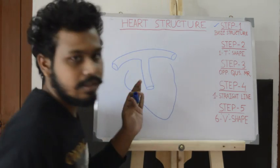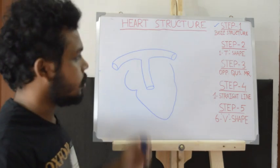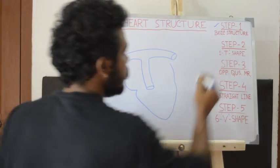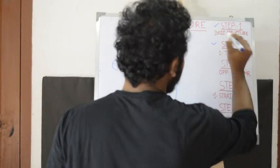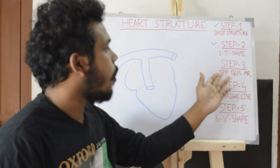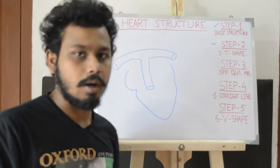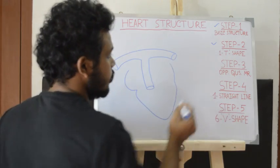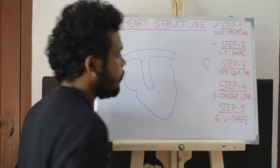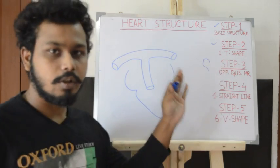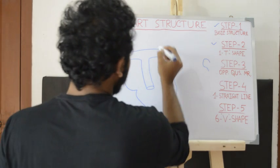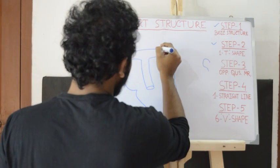Now this is the T-shaped structure and this is the completed step two. The third step is the opposite question mark — it looks like this. Let's draw it.